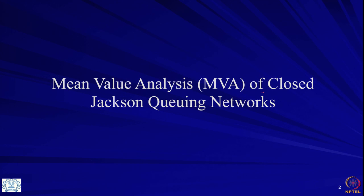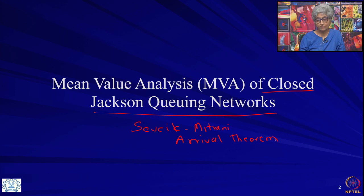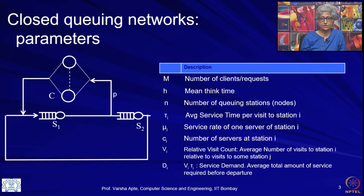We will continue from the previous lecture where we were defining closed Jackson Queuing networks. We had also learnt the Sevchik-Mitrani Arrival Theorem — please go back and revise that if you do not remember, because we will be using that in this lecture. Using this we can derive a very beautiful method called mean value analysis for finding all the metrics of the closed Jackson Queuing networks. So let us get started.